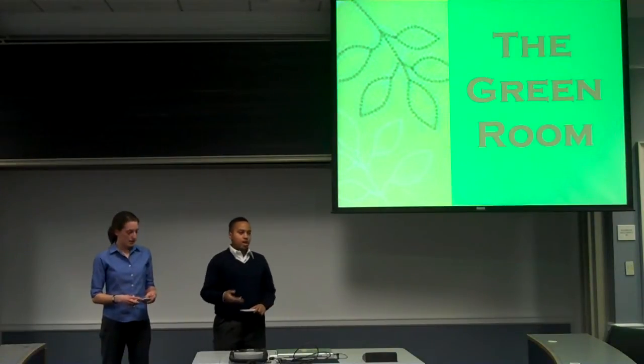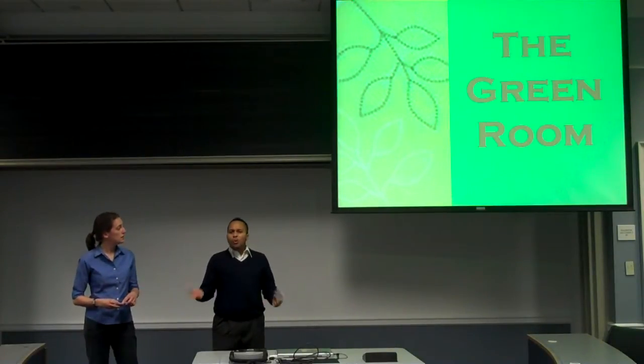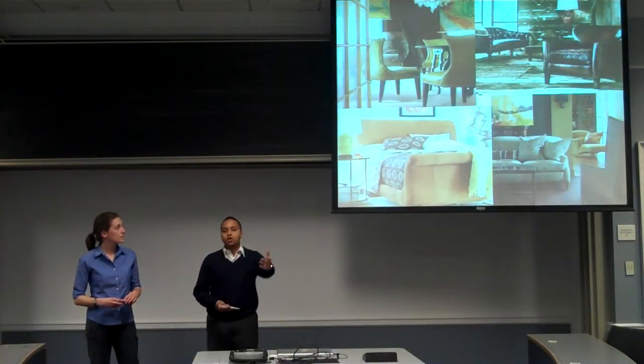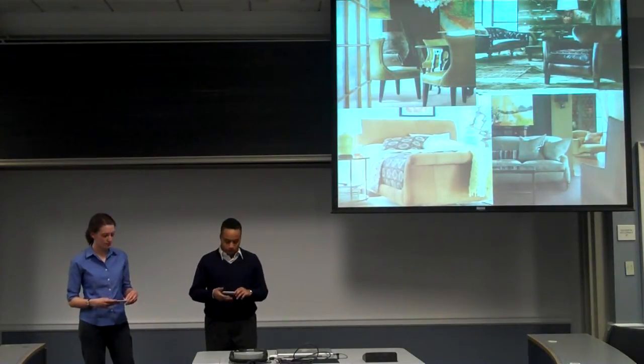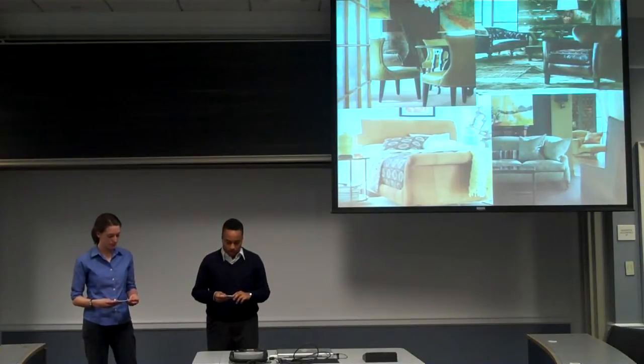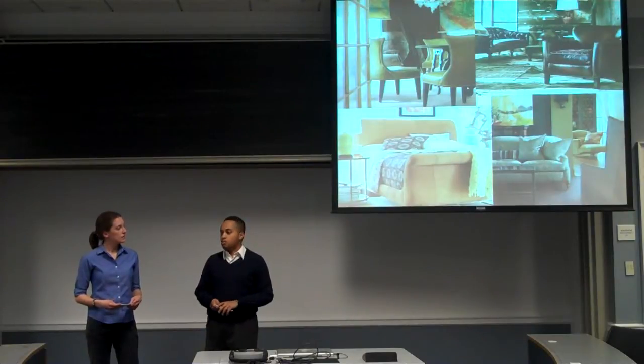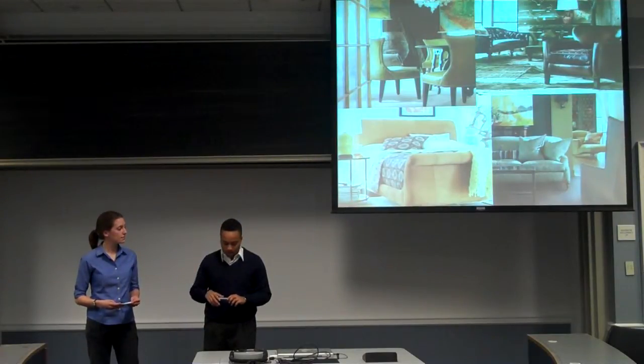So before we go into our business model, we first must ask ourselves a question. What exactly is sustainable furniture? Sustainable furniture is furniture that includes lumber from forests that have strict replanting procedures. It includes recycled metals and plastics for reduced CO2 emissions and for less processing.